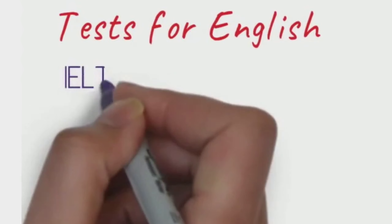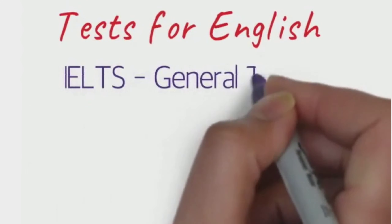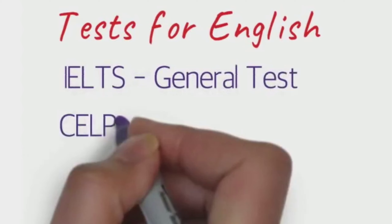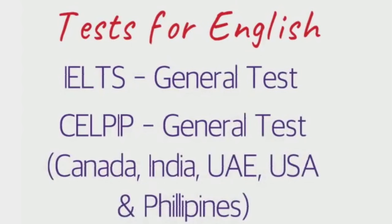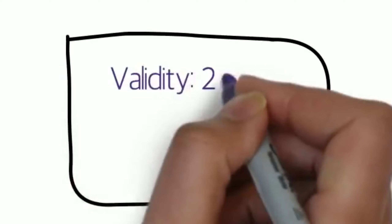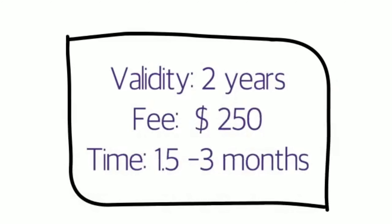In English, there are two types of tests. One is the IELTS General Test. The second is the CELPIP General Test, available in countries like Canada, India, UAE, USA, and Philippines, though in India there are only limited centers available for CELPIP. The validity of this report is 2 years from the date you receive it, the fee is around 250 Canadian dollars, and the time frame for results and preparation may vary from 1.5 to 3 months.